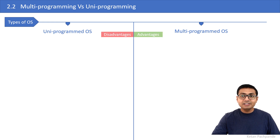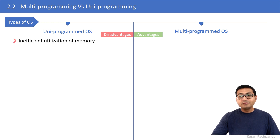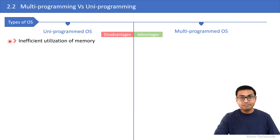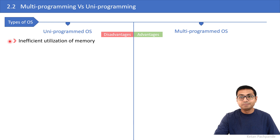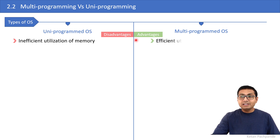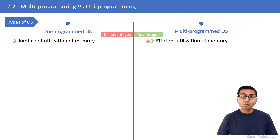Let us discuss the disadvantages versus advantages of these operating systems. The disadvantage of uniprogrammed OS is inefficient utilization of memory. Even if memory is available, other processes cannot be loaded there. Whereas the advantage of multiprogramming is that until memory becomes full, the OS can keep loading processes — making it the best use of memory.